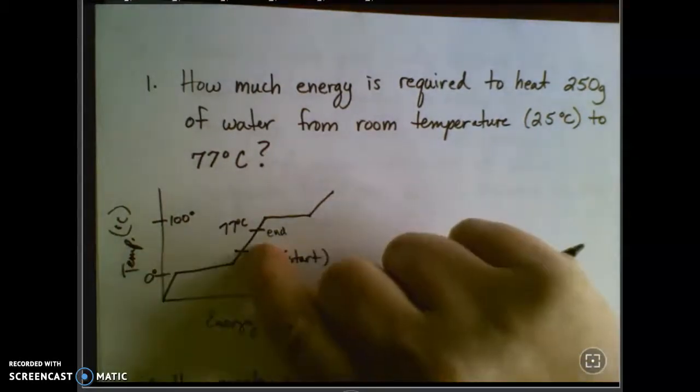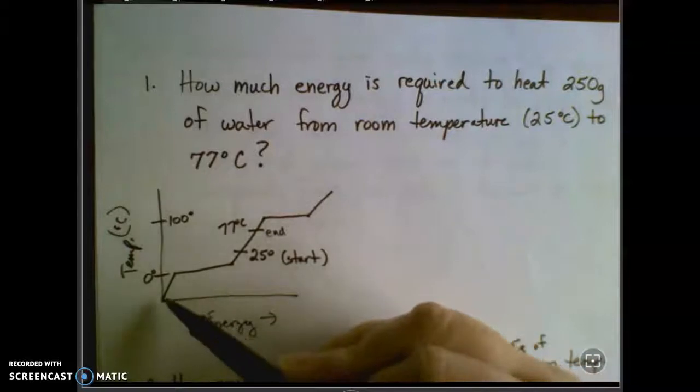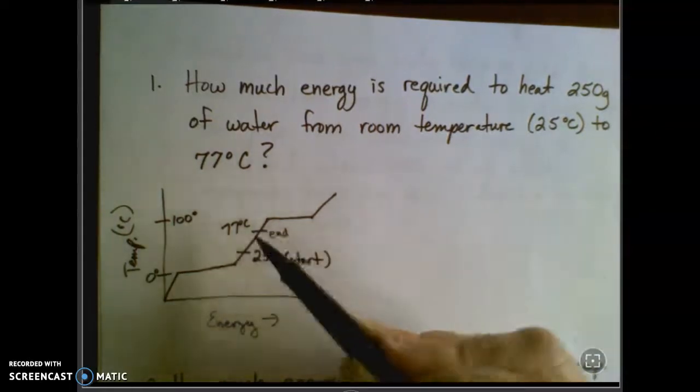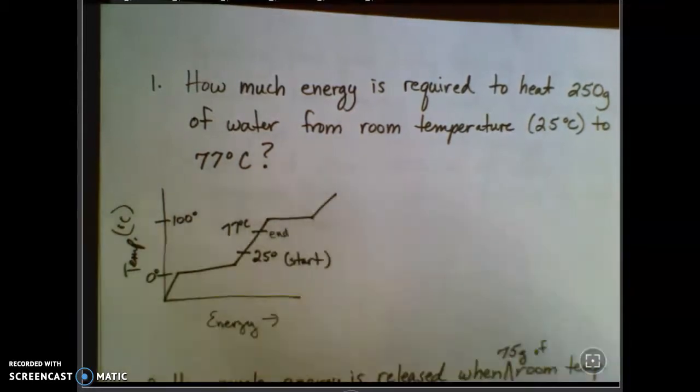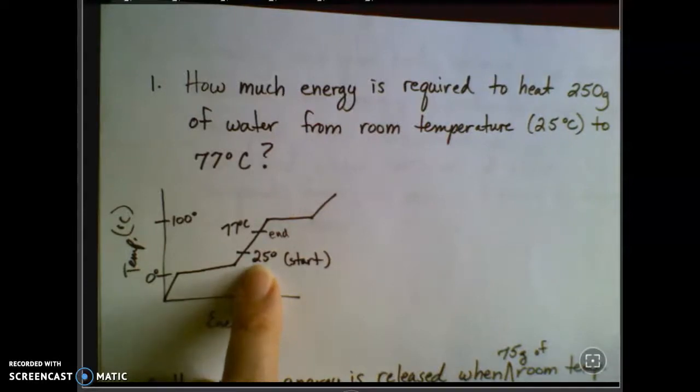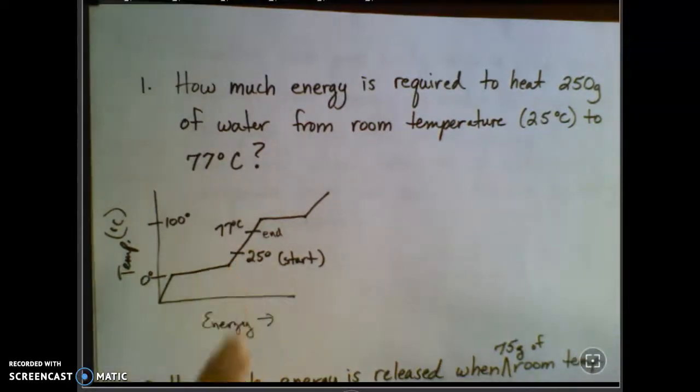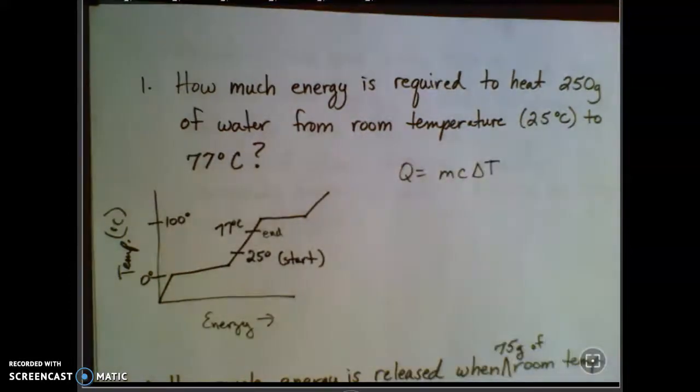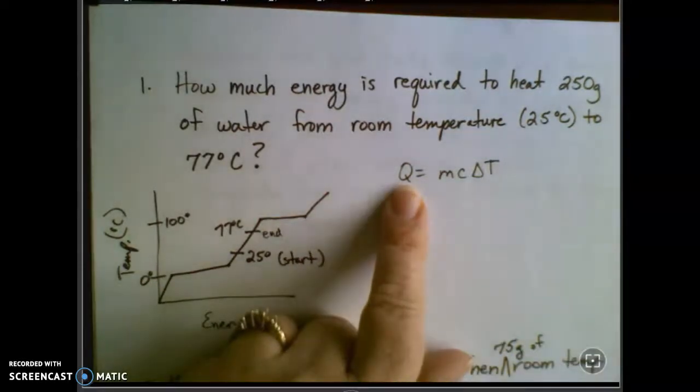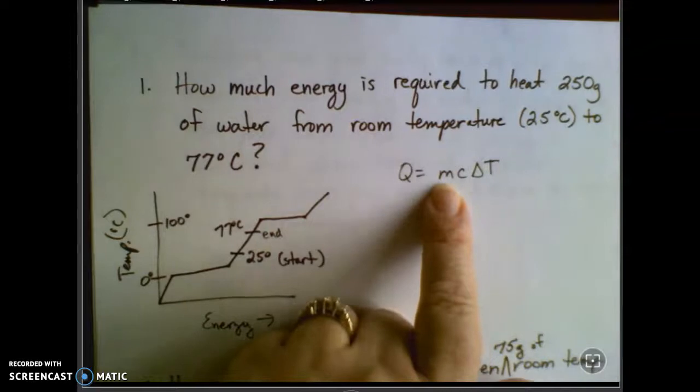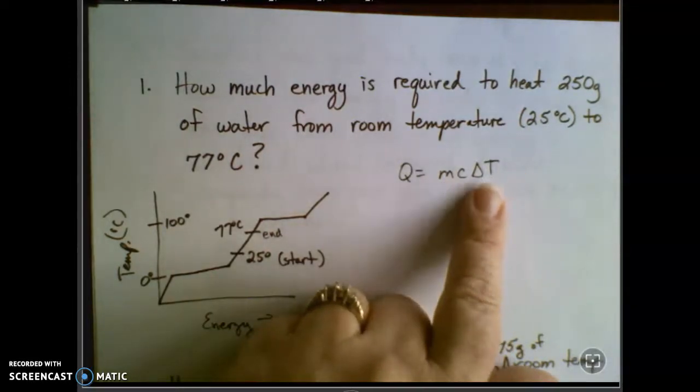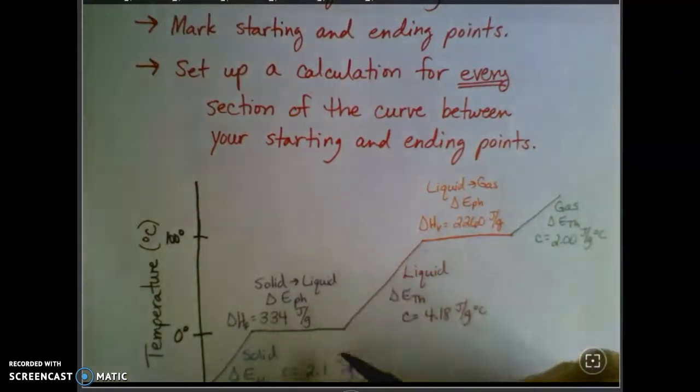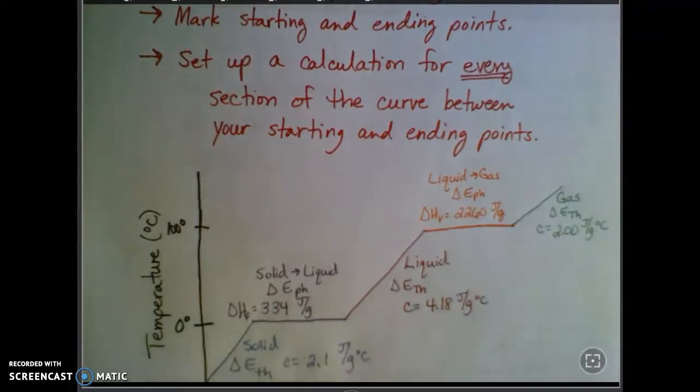And then I've got to set up a calculation for every section of the curve between my starting and ending points. So this one's pretty simple. I'm only on one part of the curve, and by section of the curve, I mean every time I change directions. But this is one part of the curve, so it's one calculation, which makes my life a little bit easier. Now, there is an equation for this. But really, I don't think you need it. Q is the energy, and that's what I'm trying to find, how much energy. M is mass, C is the constant, and delta T is the temperature change.